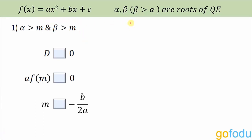We have a quadratic function, and alpha and beta are its roots — the roots of the corresponding quadratic equation ax² + bx + c = 0, where beta is greater than alpha. There are around 10 questions in this video. I want you to pause the video whenever a question appears on the screen and think about it. All you have to do is think of the inequality signs that will fill the blank spaces.